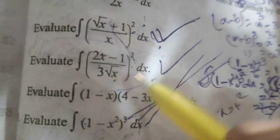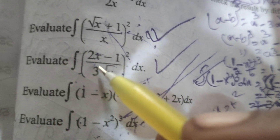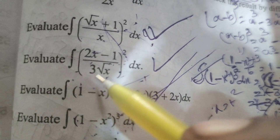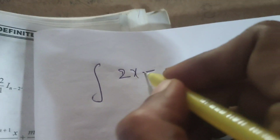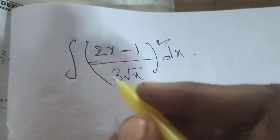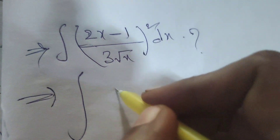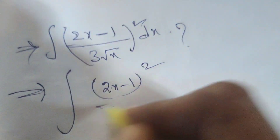Today we are going to evaluate this integral problem: integral of (2x minus 1) by (3 root x) whole square dx. Now evaluate this integral.